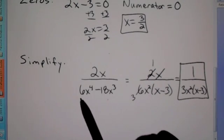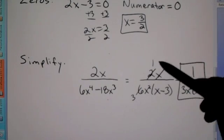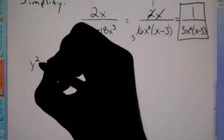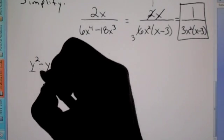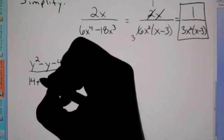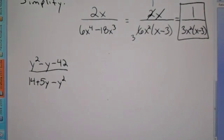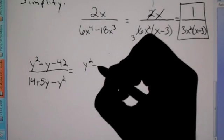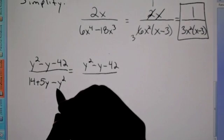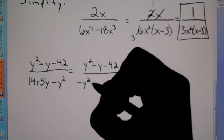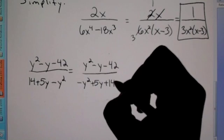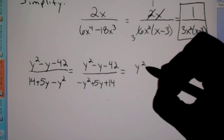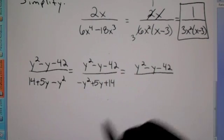Let's do another one. If I give you (y² - y - 42) over (14 + 5y - y²), first we notice there's a y² on top and a negative y² on bottom. Let's reorder the bottom so it matches — but remember to always move the symbol with the term. That gives us negative y² + 5y + 14 on the bottom. We're not solving, we're simplifying.